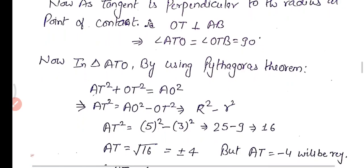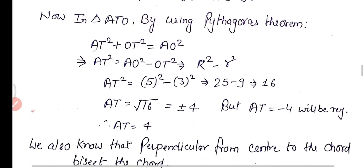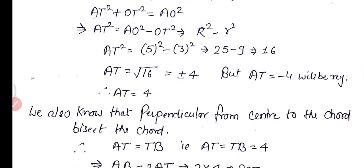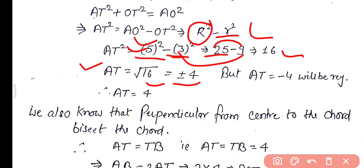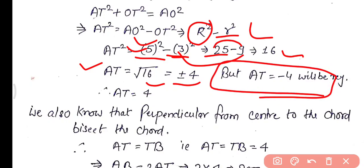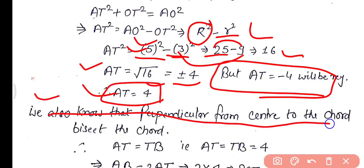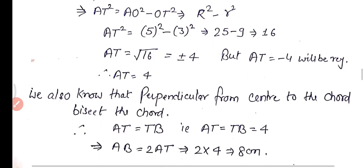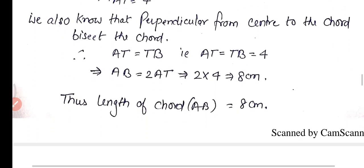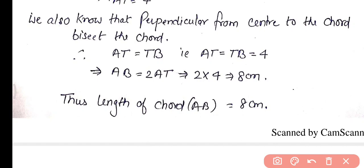In triangle OTA, by the Pythagoras theorem: AT² + OT² = OA², so AT² = R² − r² = 5² − 3² = 25 − 9 = 16, giving AT = 4 cm (rejecting the negative value). Since a perpendicular from the center bisects the chord, AT = TB = 4 cm.